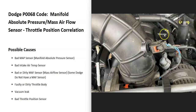If you test the MAP sensor and it tests good, or you replace it, the next thing to check is the intake air temperature sensor or the mass airflow sensor. Some Dodges don't have a mass airflow sensor — it depends on the year and engine. Many Dodges use the intake air temperature sensor instead, and either way it's basically located on the air intake somewhere right after the air filter but before the throttle body.